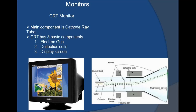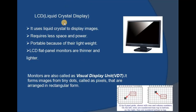CRT monitors produce information as soft copy output — we can read information on screen but cannot take a printout from the monitor itself. The drawbacks of CRT monitors are that they consume more electricity than LCD monitors and require more space. They also contain a color tube, and if that is damaged, the entire monitor may need to be replaced. Because of these drawbacks, we don't prefer to use them.